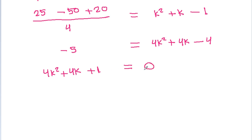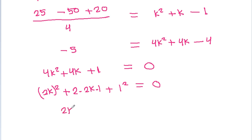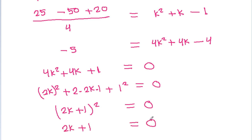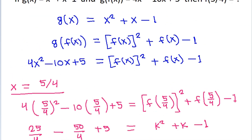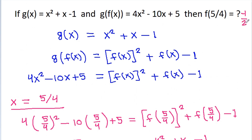Rearranging, we get 4k squared minus 4k minus 4 plus 5 equals 0, which simplifies to 4k squared minus 4k plus 1 equals 0. This factors as (2k minus 1) squared equals 0, so 2k minus 1 equals 0, giving k equal to 1/2... wait, that is 2k plus 1 minus 1 squared equals 0, so we get k equal to minus 1/2. Therefore f(5/4) is equal to minus 1/2.